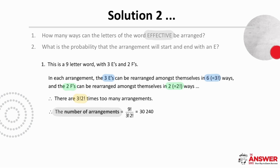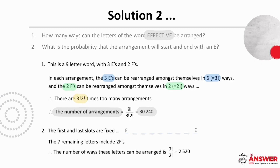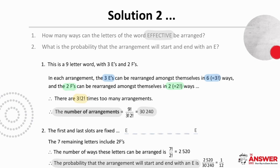The second question asks for the probability that the arrangement of 'effective' will start and end with an E. We have the total number of arrangements — 30,240 — as our denominator. For the numerator, we place nine slots: the first and last are each fixed as E, so one option each. The seven remaining letters include the two F's, so the number of ways these can be arranged is seven factorial over two factorial, which is 2520. The probability that the arrangement starts and ends with an E is therefore 2520 over 30,240, which simplifies to one twelfth.